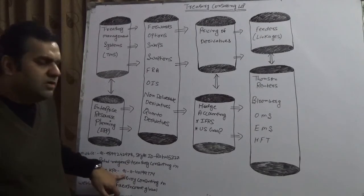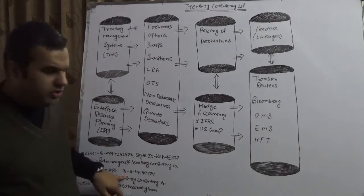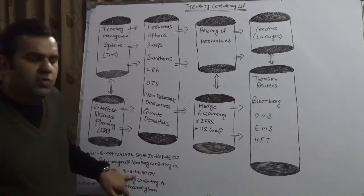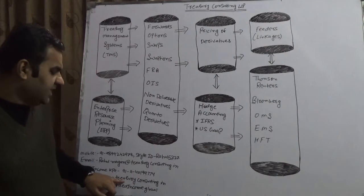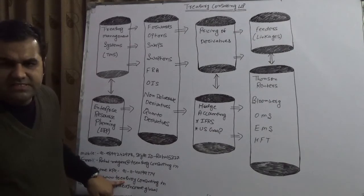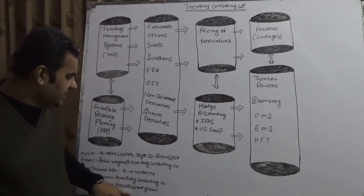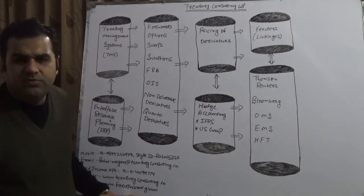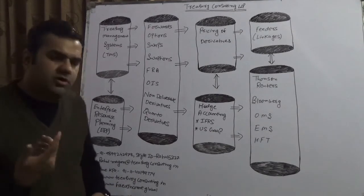My fixed income KPO is +91 which is Indian code, 11401 99774. The website is www.treasuryconsulting.in and our fixed income website is www.fixedincome.global.